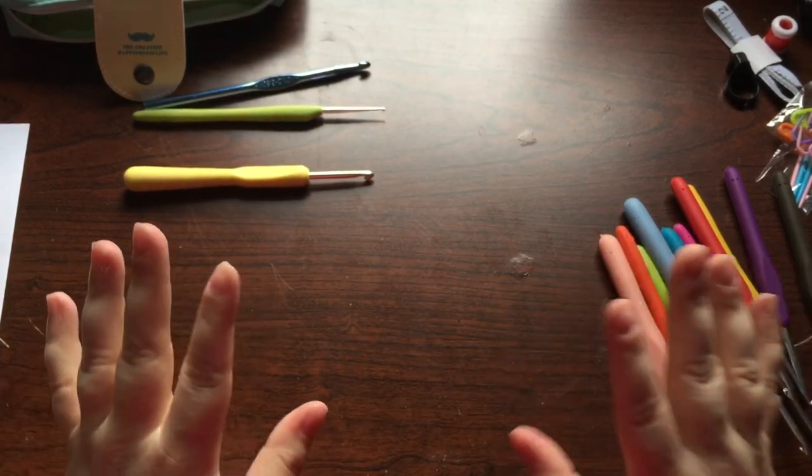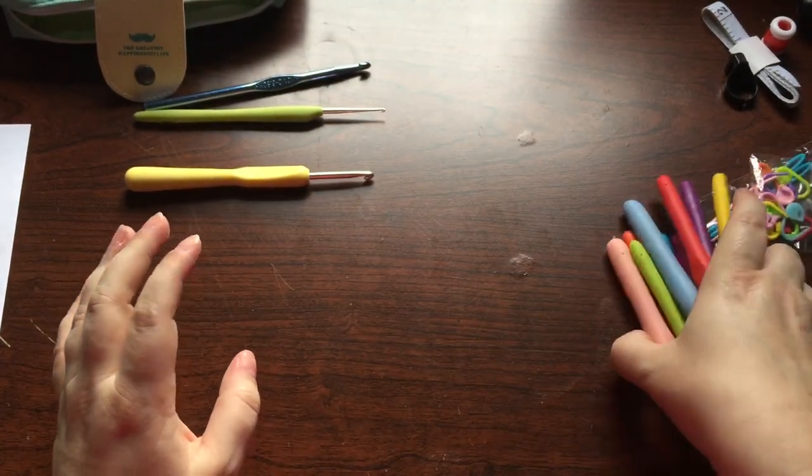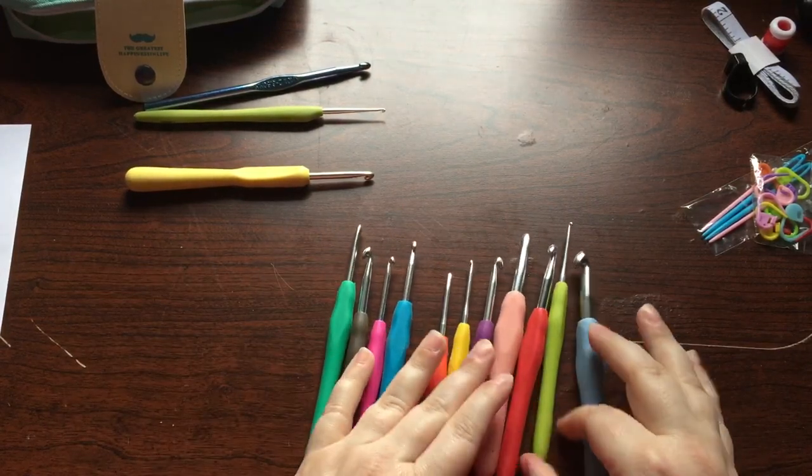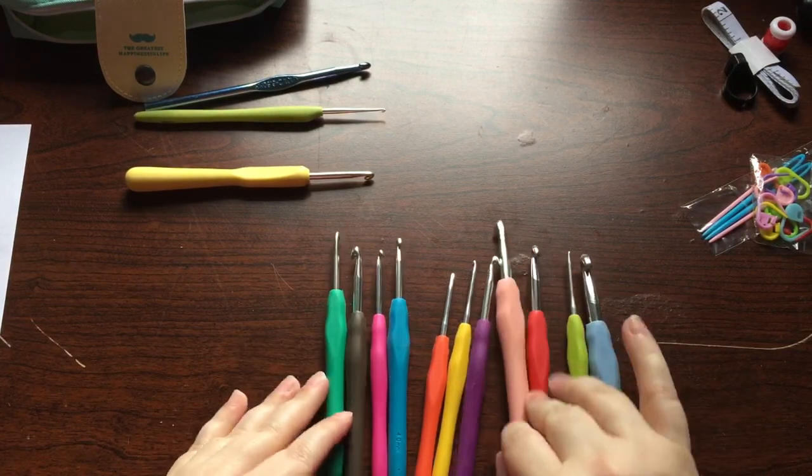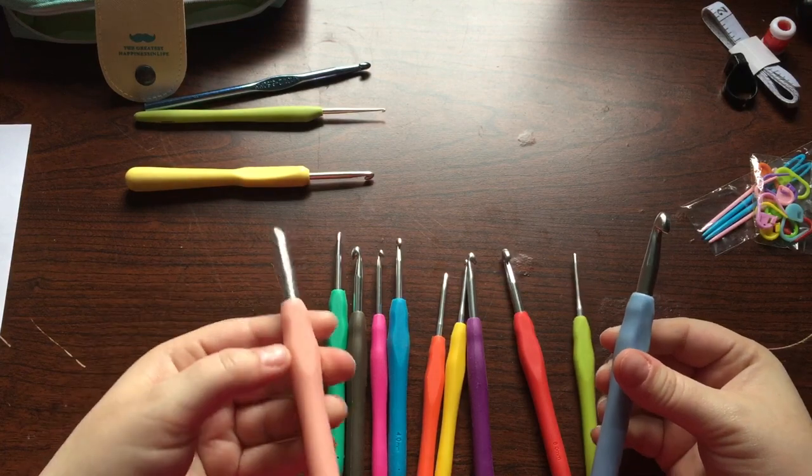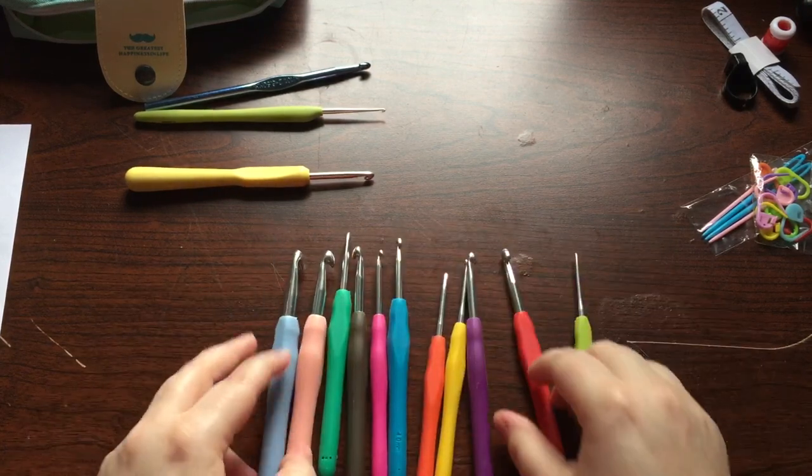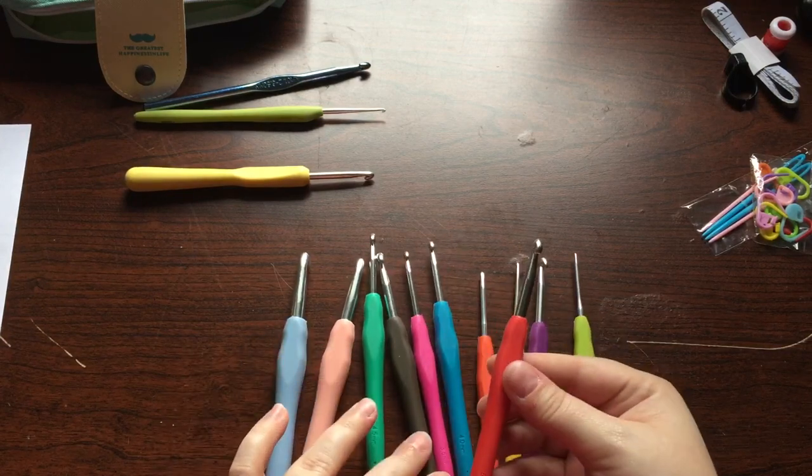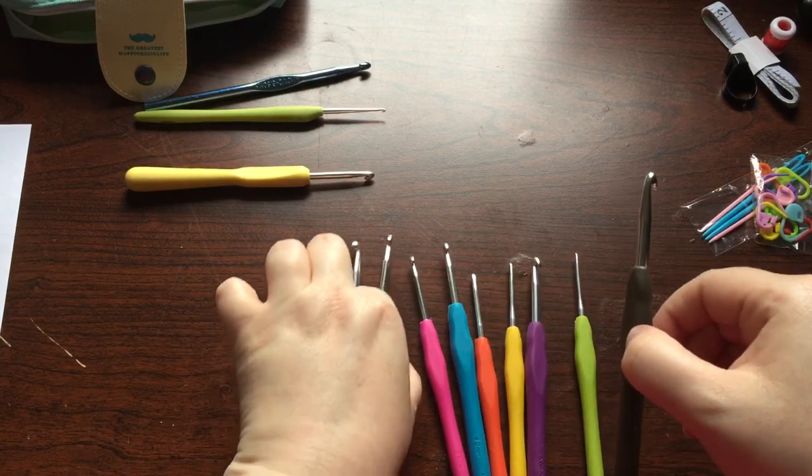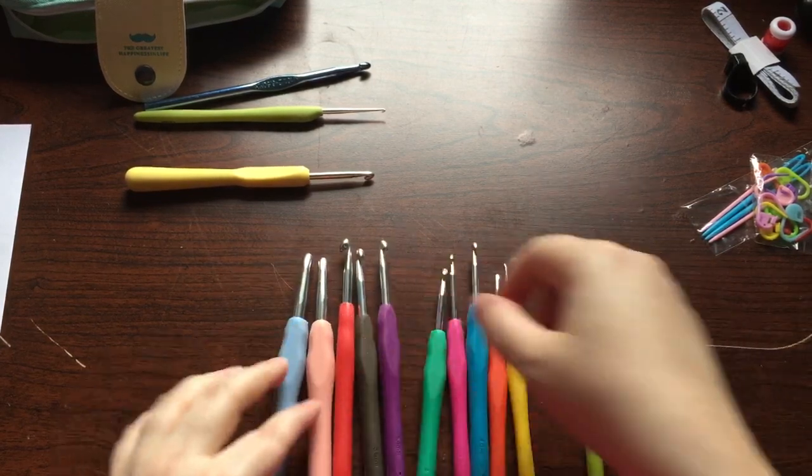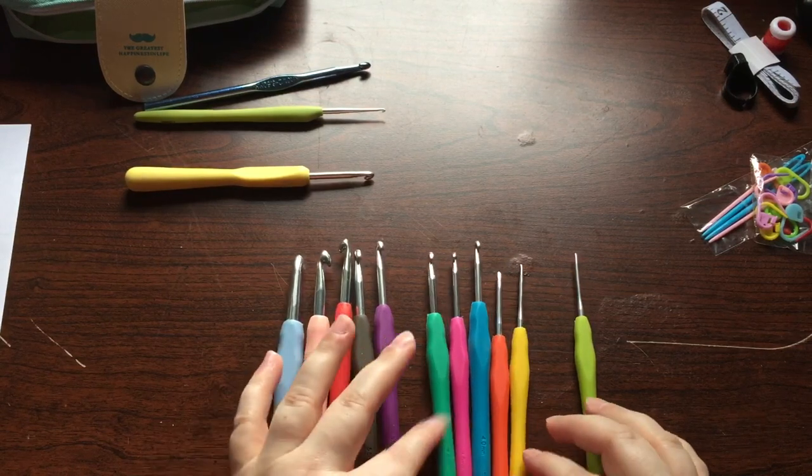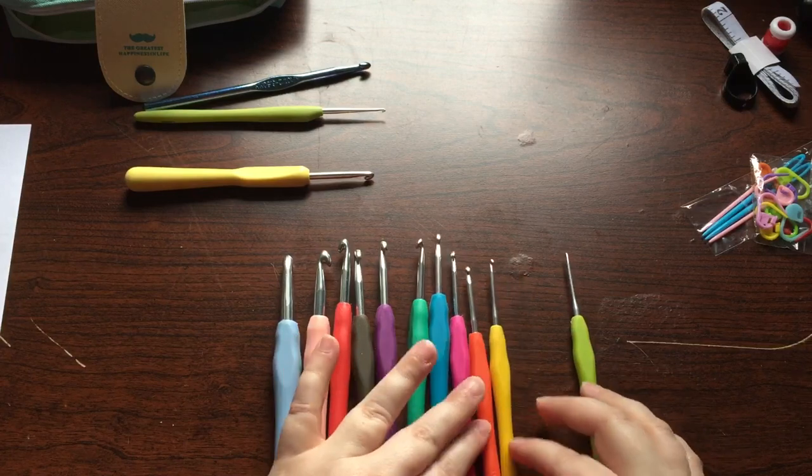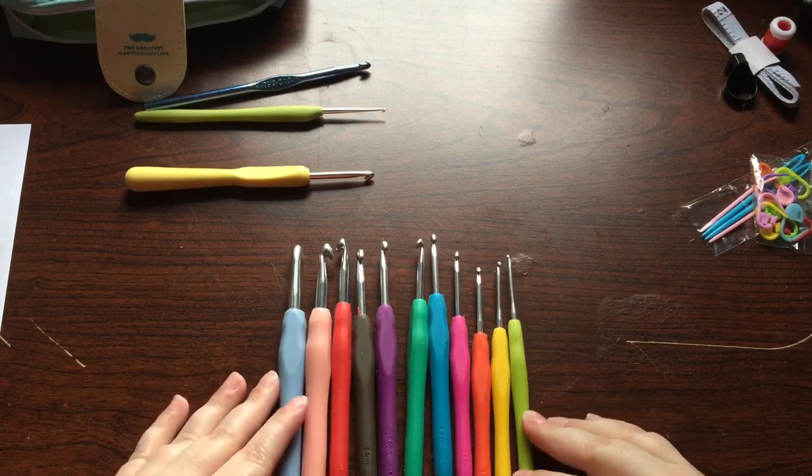Okay, so we've got the bag, we've got all of our extra pieces that they sent us. And now here is the array of hooks and I'll try to very quickly arrange them from largest to smallest. We've got an eight millimeter is the largest hook and it goes, there's a seven, a six, a 5.5, a five, a 4.5, a four, a 3.5, a three, a 2.5 and a two millimeter hook.